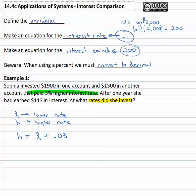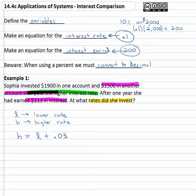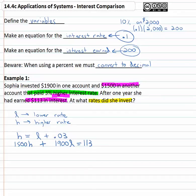Now let's make an equation for the interest earned. She earned a hundred thirteen dollars in interest. We need to be careful and read the whole problem: fifteen hundred dollars is in the account that pays the higher interest rate. So fifteen hundred dollars is at the higher rate h, and nineteen hundred dollars is at the lower rate l. If we add those interests together, we end up with the total of a hundred thirteen dollars. We can now solve with substitution because we know h equals l plus .03.